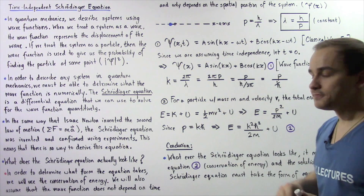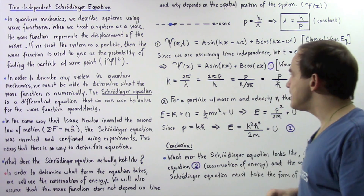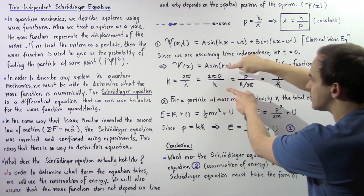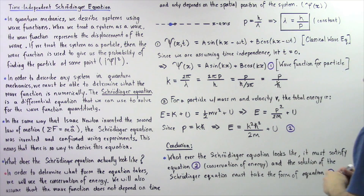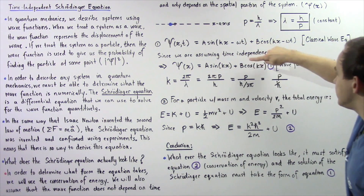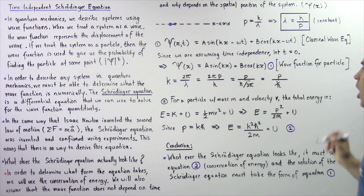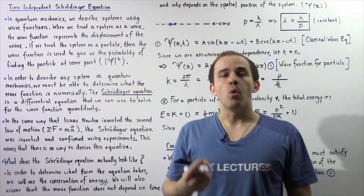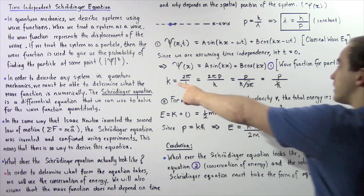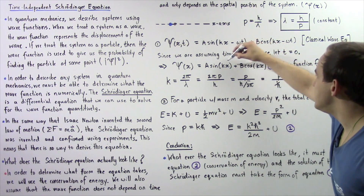Now, what exactly is k? k is a constant equal to 2π / λ, from classical physics. Since lambda = h / p from the de Broglie relation, substituting gives k = 2π / (h/p) = p / (h/2π) = p / ℏ, where ℏ (h-bar) is a constant equal to 1.055 × 10⁻³⁴ J·s. So k = p / ℏ.